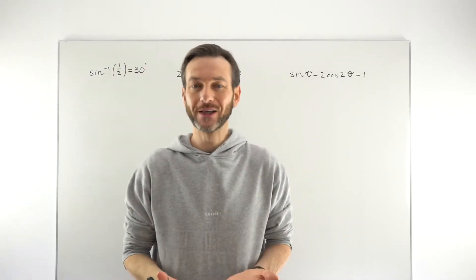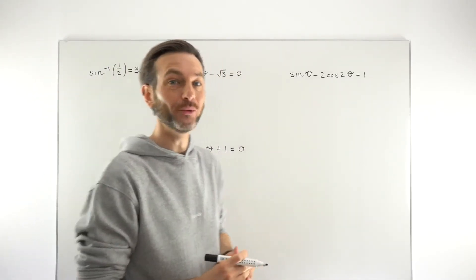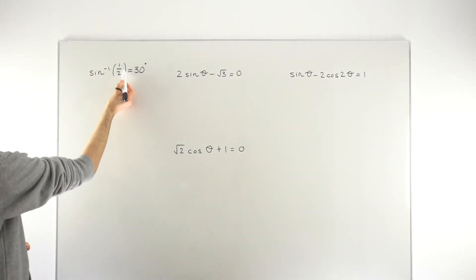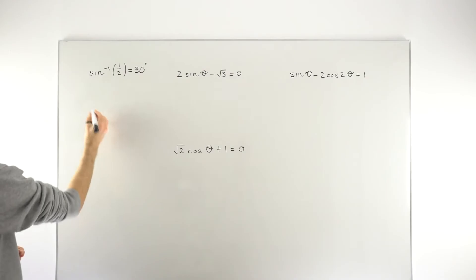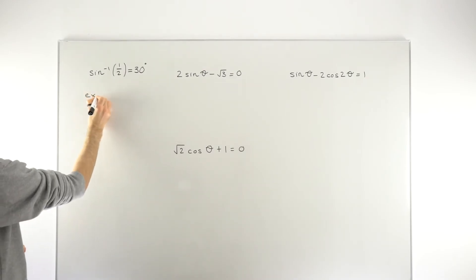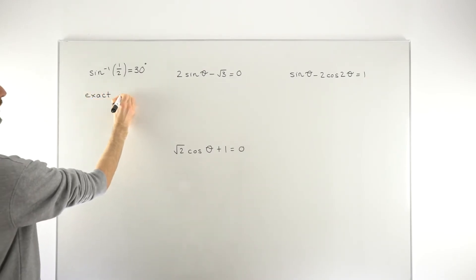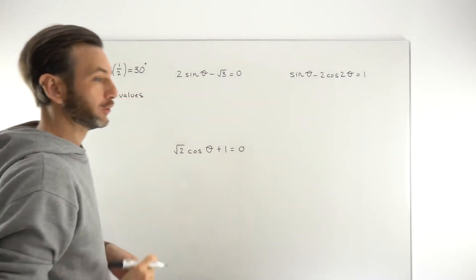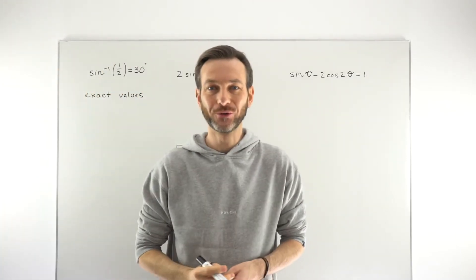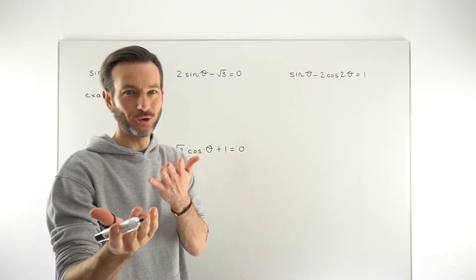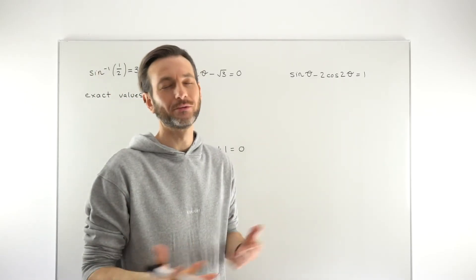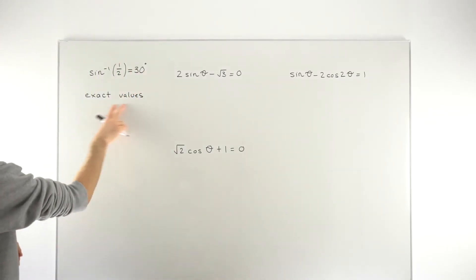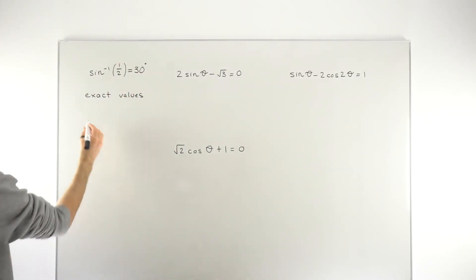The question we're going to ask is: how do we get those values without the use of a calculator? How can I work out that 30 degrees from this information without the calculator? To do that, we're going to use something called trig exact values. Exact values come from what's called the unit circle definition of the trig functions, and it gives us this very useful information.